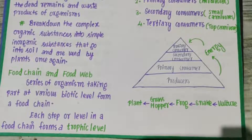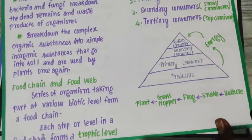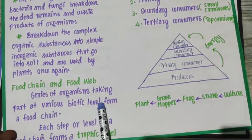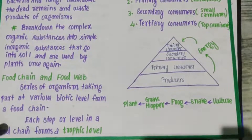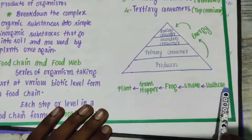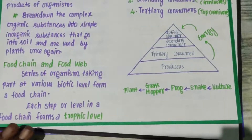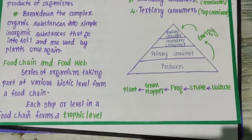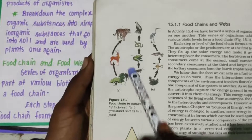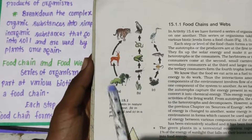Hello students, welcome to this topic. We are going to continue with food chain and food web. A series of organisms taking part at various trophic levels forms a food chain. In your book they have shown pictures with three food chain examples: the first one is forest, the second is grassland, and the third is the pond.